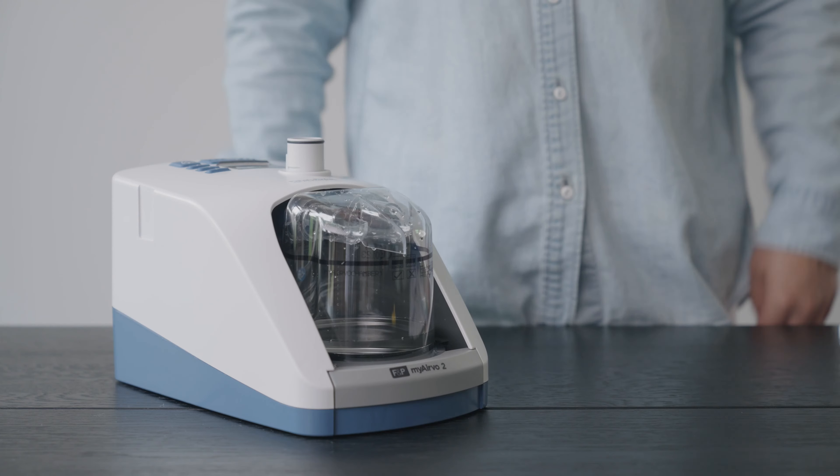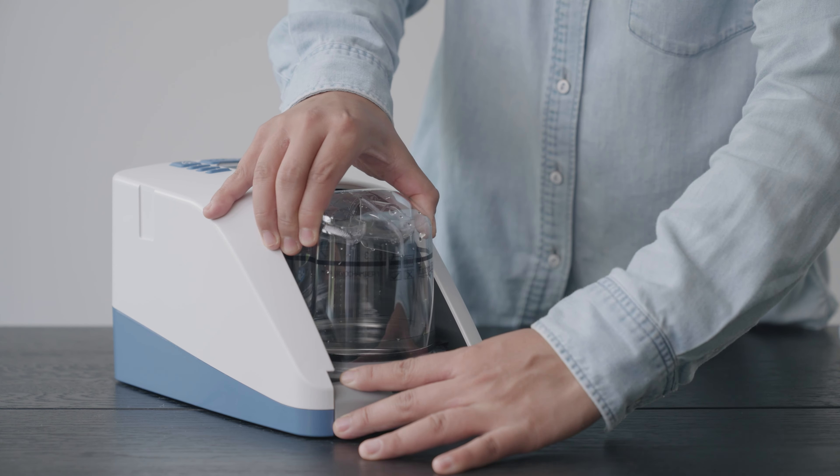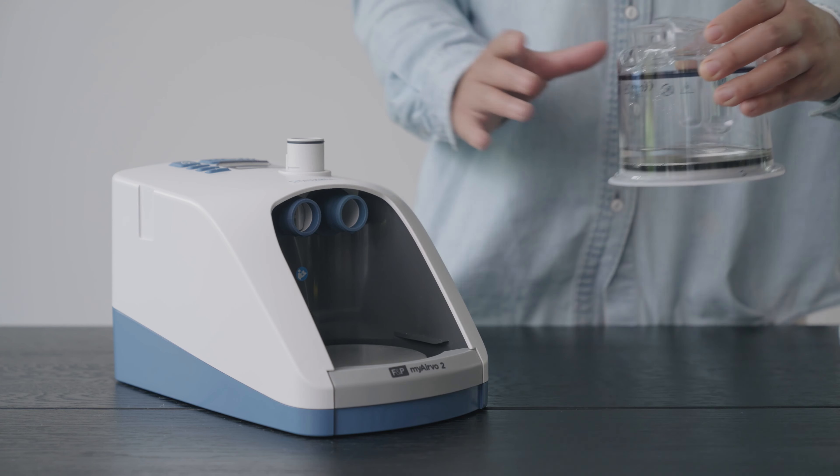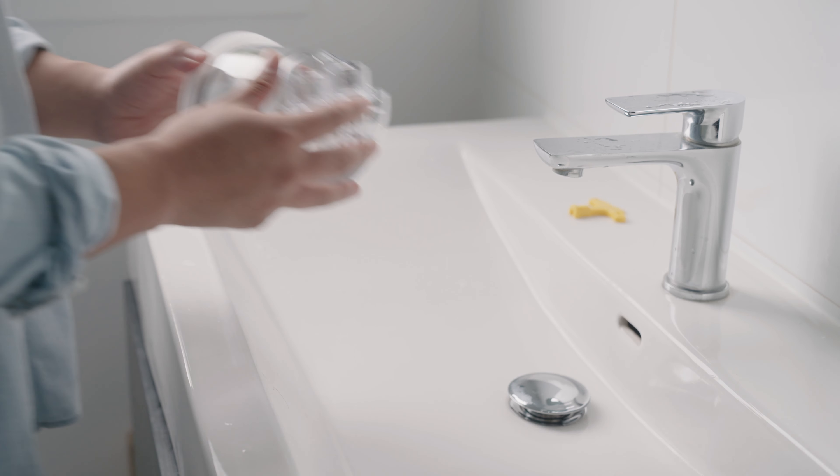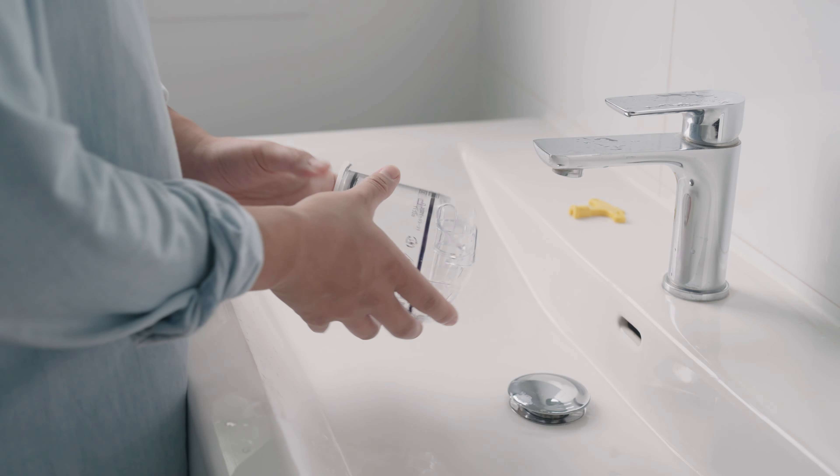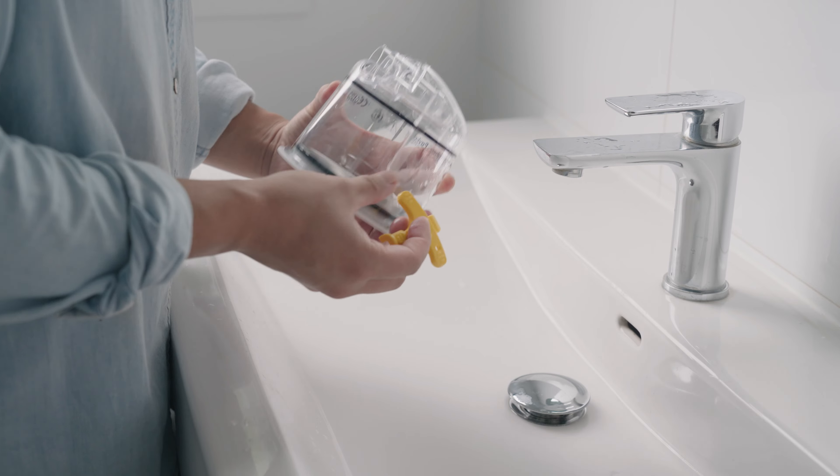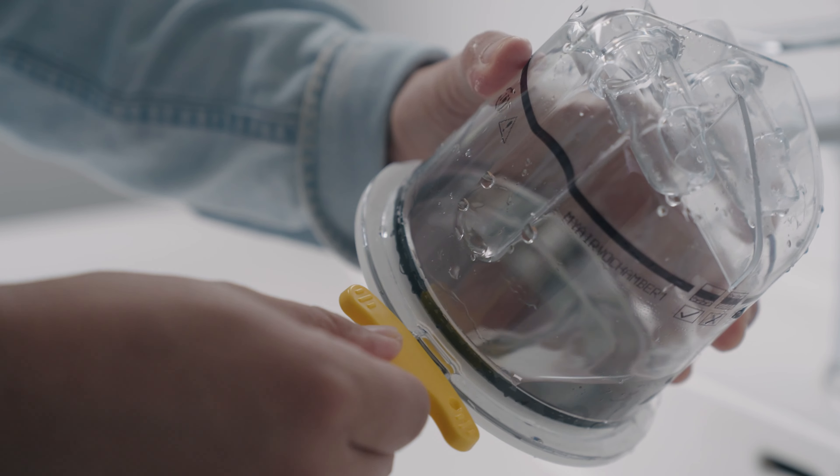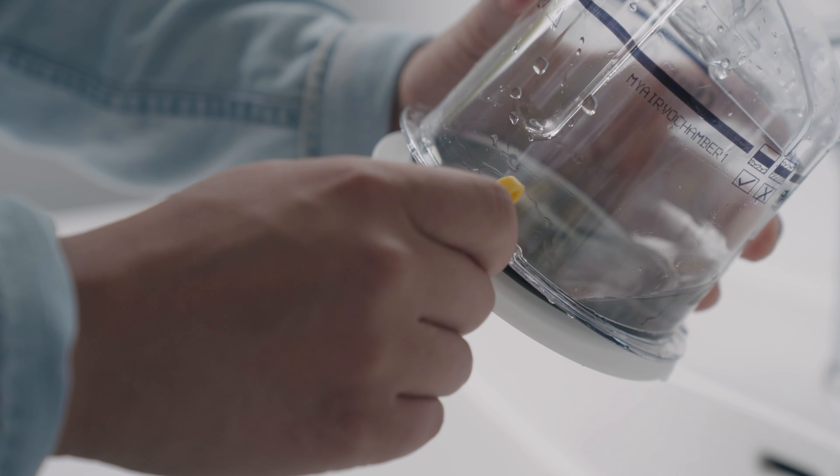After you have finished therapy and completed a drying mode cycle, hold the finger guard down and slide the chamber out of the Maiva. Discard any remaining water by tipping the chamber upside down. Separate the chamber dome from the base with the removal tool.